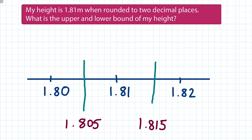So my actual height, when rounded off to two decimal places to give 1.81, has got to be at least 1.805. Anything below that, we would round it down to 1.80. And the upper limit is 1.815 — it can't actually be 1.815, but that's where the boundary is where we go from rounding to 1.81 up to 1.82. So lower bound: 1.805, and upper bound: 1.815.